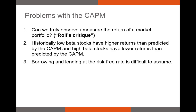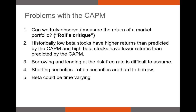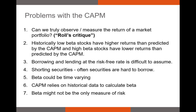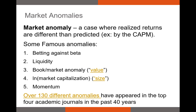Most investors are not able to borrow and lend at the risk-free rate or short securities, meaning there are market frictions. These investors are less able to profit on valuable information, making the market less efficient at pricing in new information. Additionally, we assume beta is constant from period to period, but a stock's beta can change dramatically through time, especially if the firm is changing its operations. Historical beta may not reflect future beta.